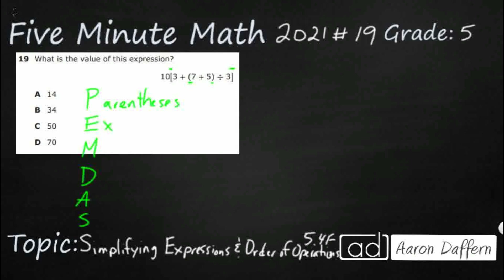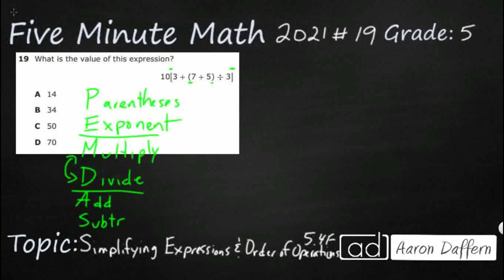So we'll take care of the parentheses first. No exponents to worry about in fifth grade. Next, multiply and divide — I want you to see that they are inverse operations, which means they are equal. You can do division before multiplication if you see it left to right. Same with addition and subtraction — those are inverse operations and those are the final level. You can do subtraction first if it comes first, left to right.